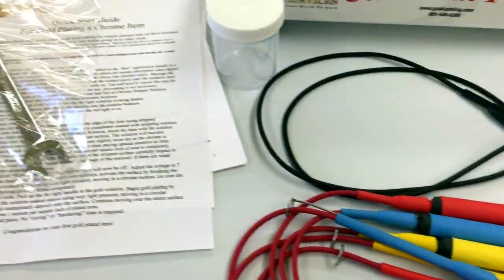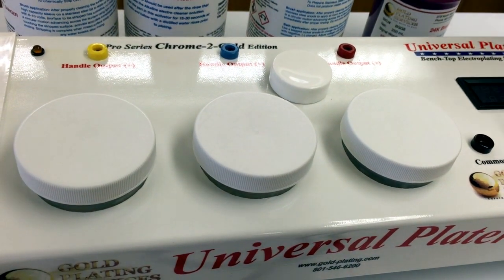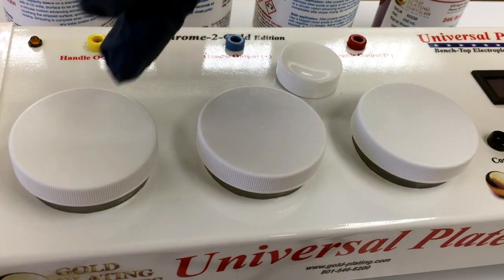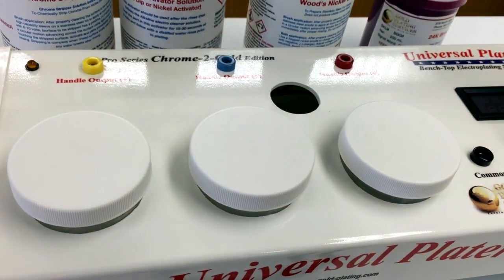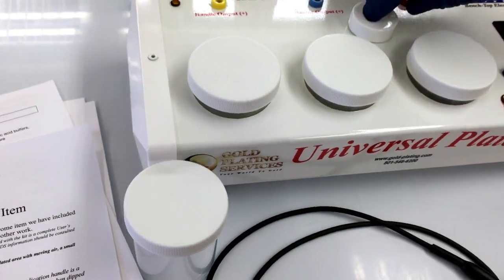It comes with four beakers. These are all outlined on the checklist. Four beakers for the brush solutions—three that you use and one for an extra and your fine select beaker when you want to do fine select plating with rhodium or gold.